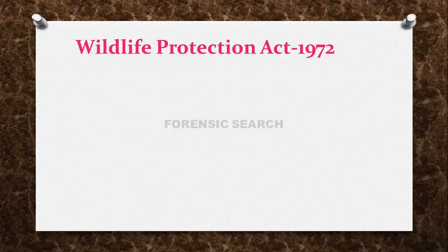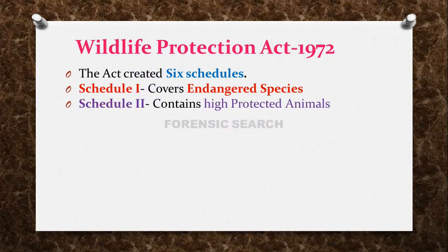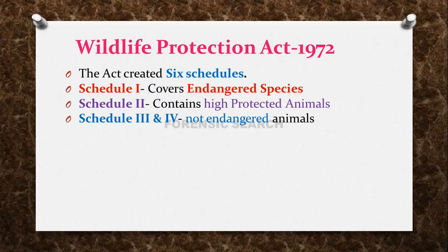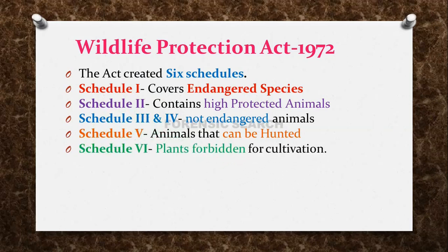The Wildlife Protection Act 1972 created six important schedules. Schedule 1 covers endangered species. Schedule 2 contains highly protected animals. Schedules 3 and 4 are concerned with not-endangered animals. Schedule 5 contains animals that can be hunted. Schedule 6 concerns plants forbidden for cultivation.